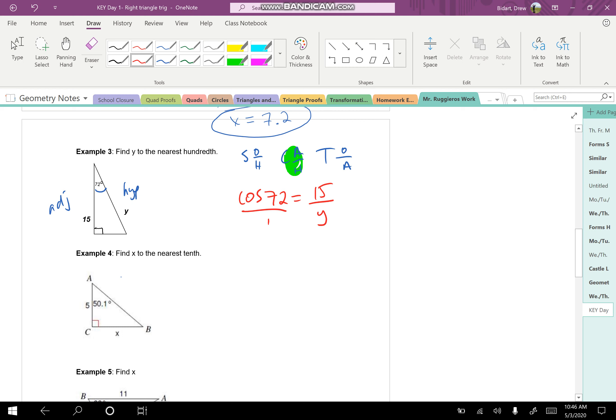So when I cross multiply here, one thing I want you to notice, 15 times 1 is 15. But look what happens when I do y times the cosine of 72. The way we have to write that is we put the y in front of the cosine of 72. It's y times the cosine of 72.